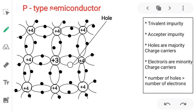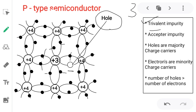Next type is P type semiconductor. P means positive; positive means hole. To make a P type semiconductor, for a pure semiconductor we add trivalent impurity. Tri means three valence electrons. These three valence electrons are bonded with the neighboring atoms. One empty space is generated, and it indicates a hole.